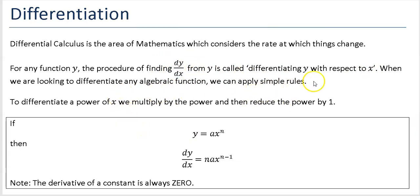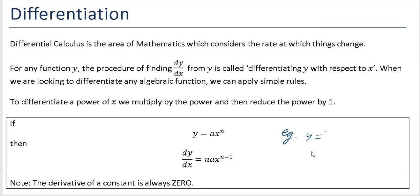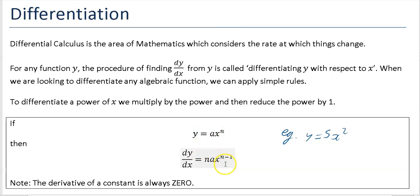When we're looking to differentiate any algebraic function we apply these simple rules. First, your function must be in index form — in the form a x to the power of n. You multiply by the power, so that n comes down and multiplies, and you reduce the power by 1.